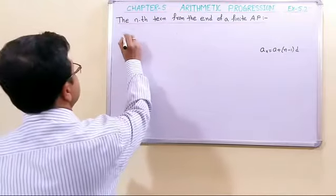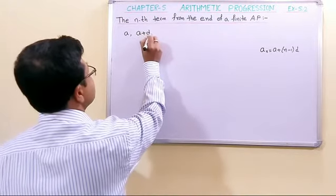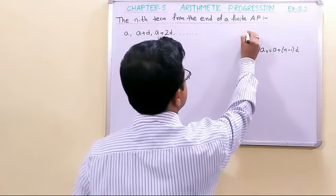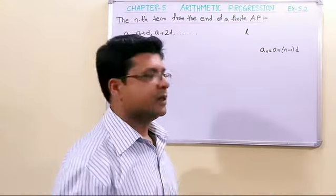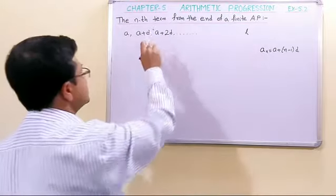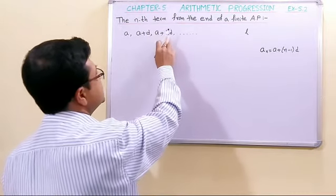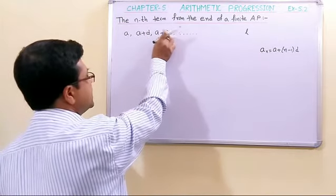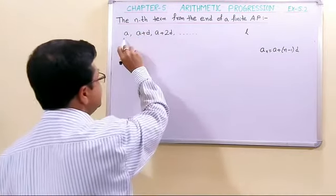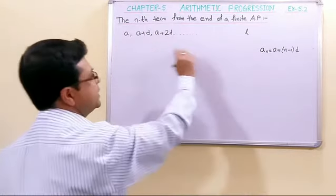Consider an AP where the first term is a, the next term is a + d, then a + 2d, and so on. The nth term or last term is l. When we move from left to right, we are adding d continuously to get each consecutive term. From right to left, we subtract d — so from the third term to the second term, a + 2d minus d gives a + d, and from the second to the first we subtract d again.